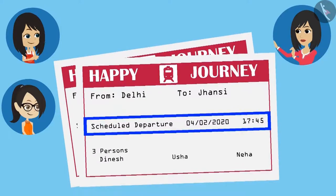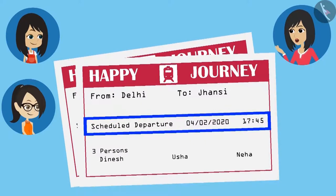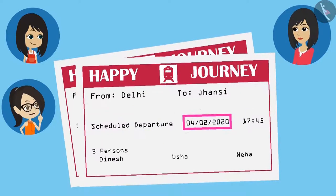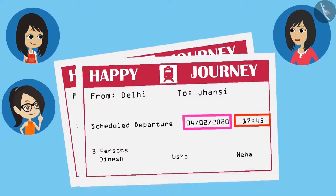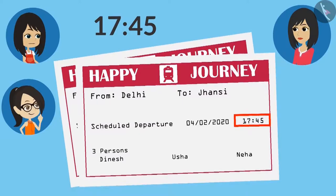So we have to board the train before this time. This means this information is showing the time. Yes, it is showing both the starting date of the journey and time of the train. Here we have understood the date, but where is the time written? Look here, Vandana — time is written right in front of the date. But it is written as 45 minutes past 17.